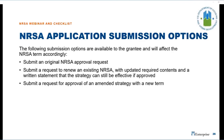The following submission options are available to grantees and will affect the NRSA term accordingly. The first is an original NRSA application submission of a new target area. The second type is a request to renew an existing NRSA with updated required contents and a written statement that the strategy can still be effective if approved. The final type is a request for approval of an amended strategy with a new term.